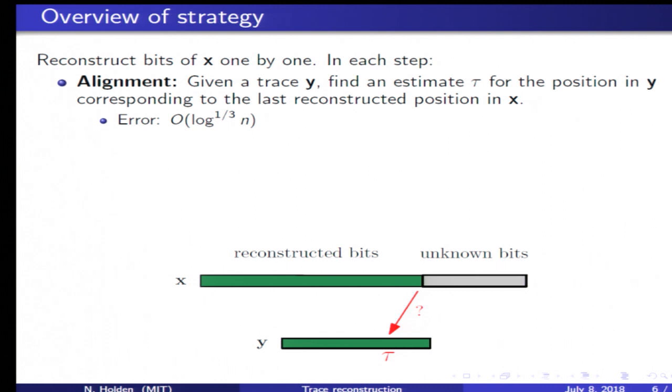Our method is based on reconstructing the bits of X one by one. We imagine that we are at the point in time where we have reconstructed the part of the string shown in green, and the part of the string shown in gray consists of unknown bits.